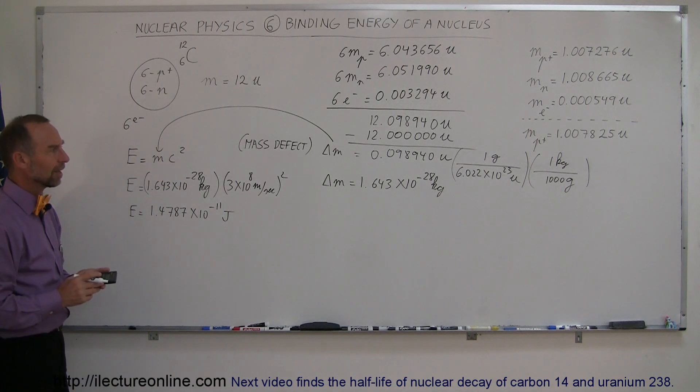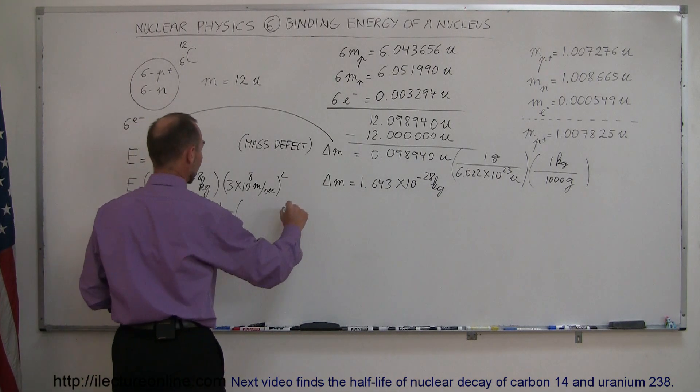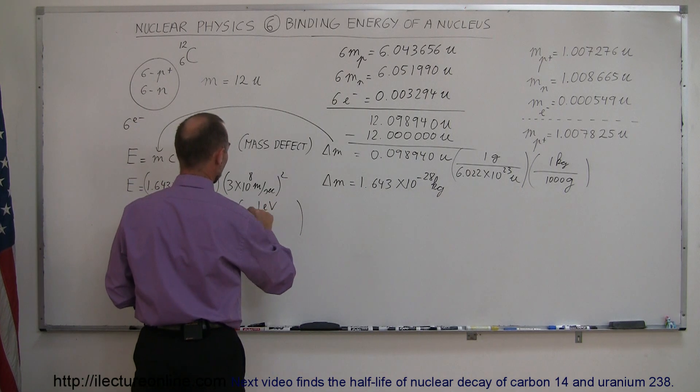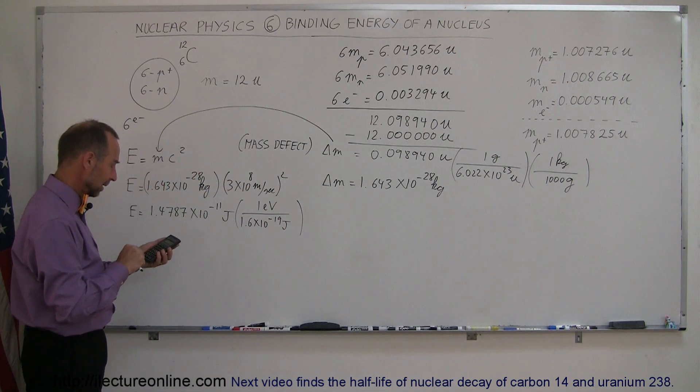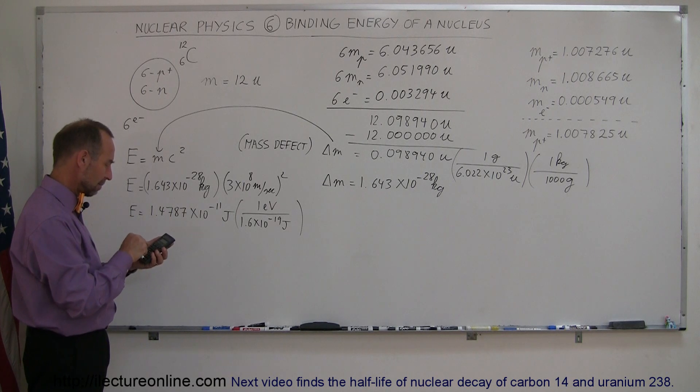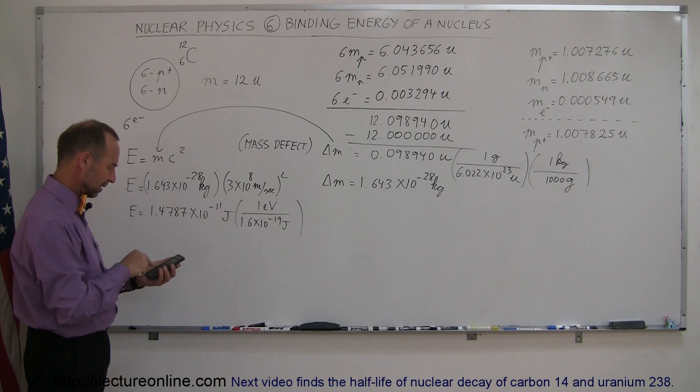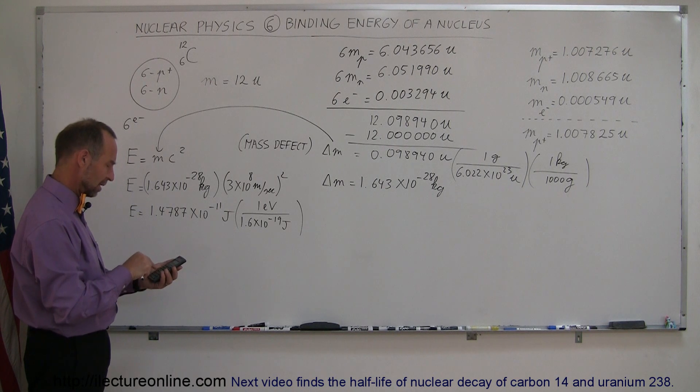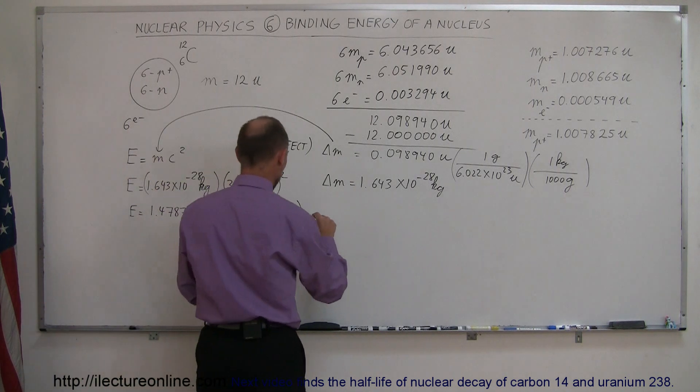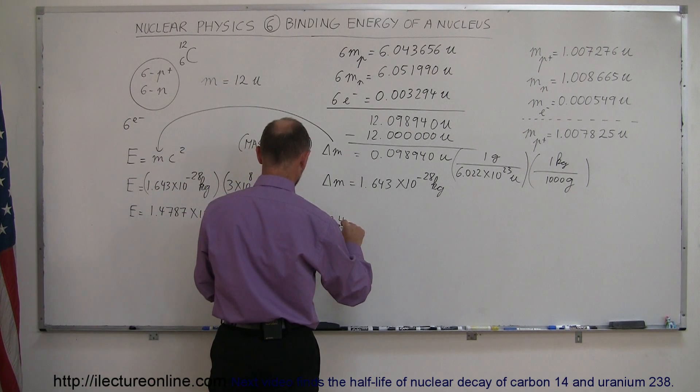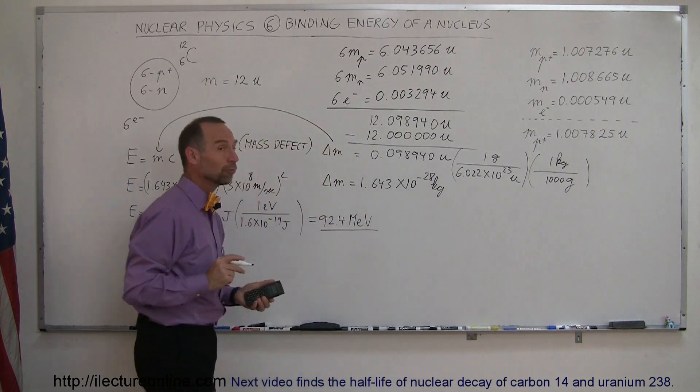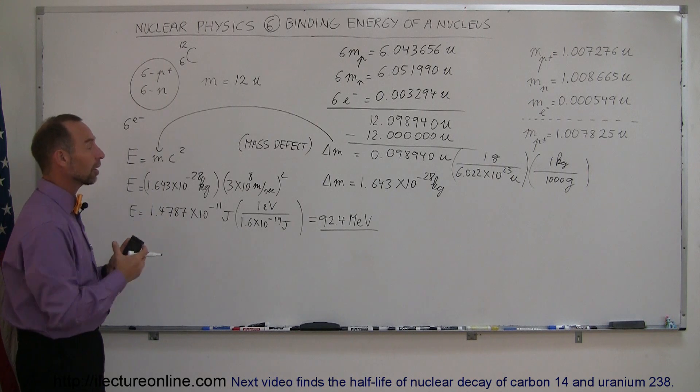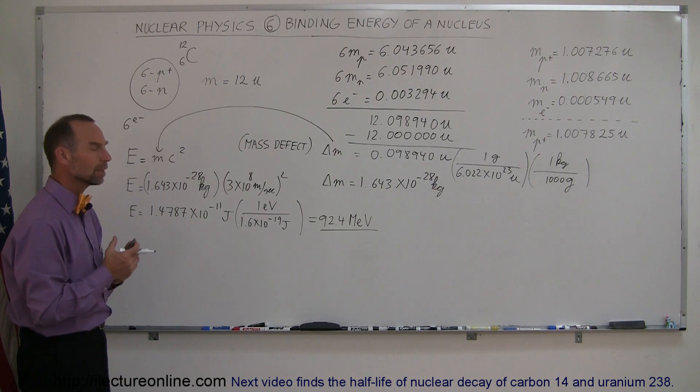Now sometimes it helps to convert that to electron volts. So if we want to convert that to electron volts, we have 1 electron volt is 1.6 times 10 to the minus 19 joules. So divide this by 1.6e-19 joules, and we get 92.4 MeVs. That's million electron volts. So the energy released by putting a nucleus of carbon together is 92.4 million electron volts.